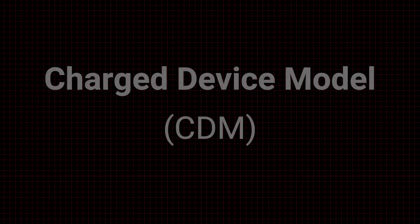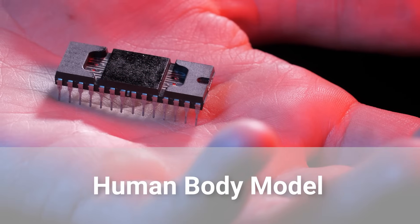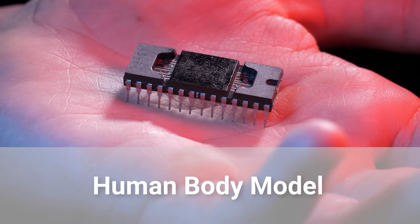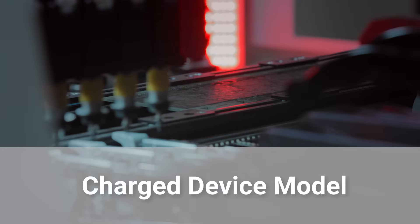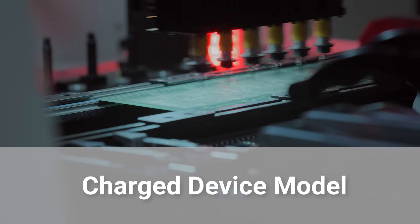The Human Body Model and Charged Device Model. The Human Body Model is used to represent a discharge between an ESD-sensitive device and a human being. The Charged Device Model is used to represent the charging and discharging of a component or device. Both HBM and CDM type damage are concerns in today's industry.